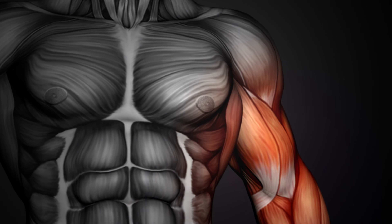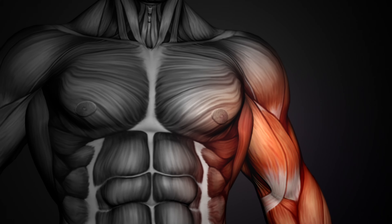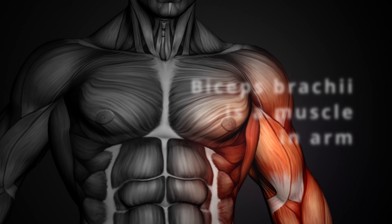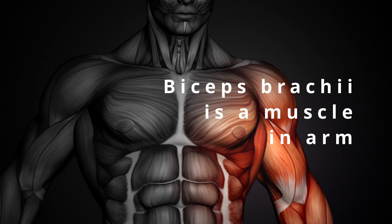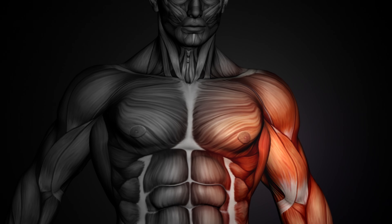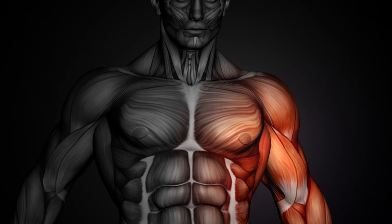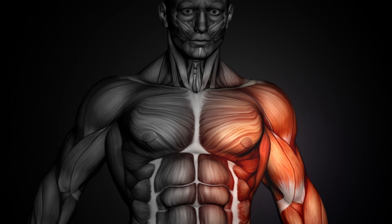For example, biceps brachii is a muscle present in the arm. In Greek, the arm is called brachium, and that is why the muscle is called biceps brachii.